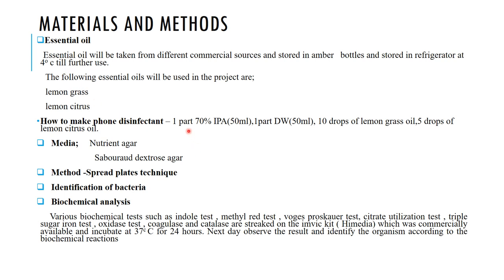To prepare the essential oil-based disinfectant, we take 50 ml of 70% isopropyl alcohol, 50 ml of distilled water, 10 drops of lemongrass oil, and 5 drops of lemon citrus oil. For bacterial isolation, we use Nutrient Agar media, and for fungal isolation, we use Sabouraud Dextrose Agar. The method used to isolate microorganisms is the spread plate technique. After isolation, bacterial identification is carried out using Gram staining and several biochemical tests.